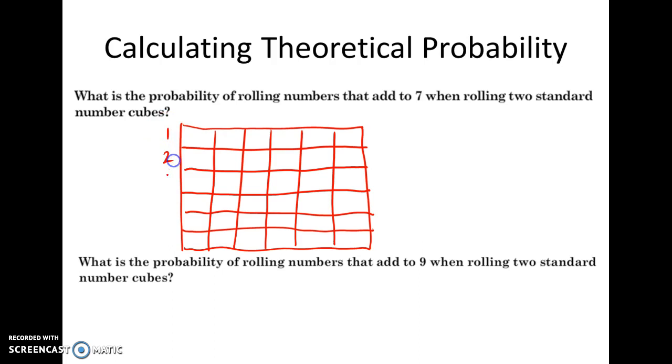So one number cube, my options of rolling would be 1, 2, 3, 4, 5, and 6. The other number cube, same thing, I could roll a 1, a 2, a 3, a 4, a 5, and a 6. So what's the theoretical probability that the 2 die would add to 7? Well, I'm going to go through here, and I'm going to put a check mark everywhere I see 7 as a sum. Roll a 1 and a 6, that would give me 7. Roll a 2 and a 5, 3 and a 4, 4 and a 3, 5 and a 2, and 6 and a 1. Everything else would give me less than 7 or greater than 7.